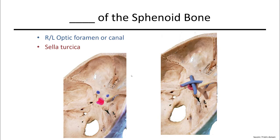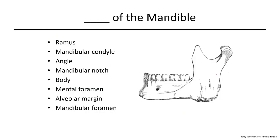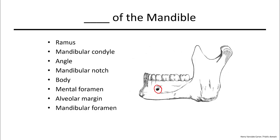The right and left optic foramen, also known as optic canals, and the sella turcica are highlighted on the sphenoid bone. The ramus of the mandible is the upper portion; the mandibular condyle is where we pivot in opening and closing our mouth. The angle is at the back, and there is the mandibular notch. The body of the mandible is the main portion on either side. The mental foramen — a hole on either side of the chin — is where blood vessels and nerves exit. The alveolar margin is the area where the teeth are set. The mandibular foramen is on the medial side of the ramus, where a nerve comes through to serve the teeth.